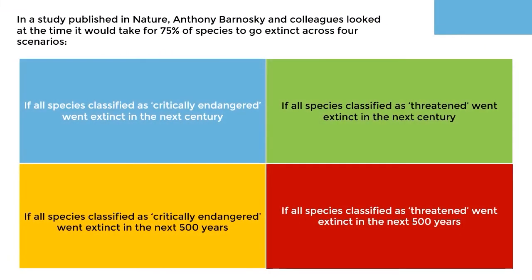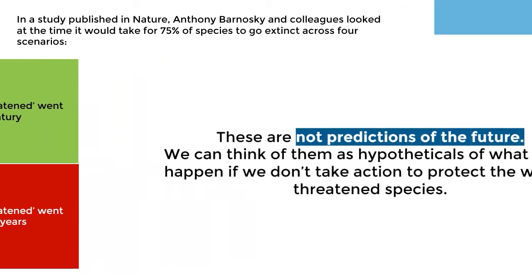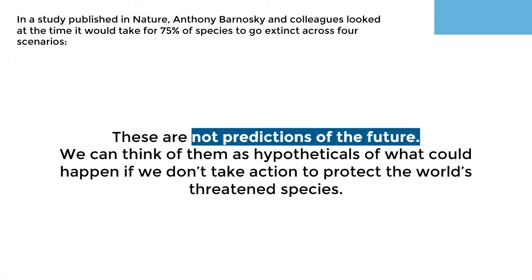In a study published in Nature, Anthony Barnosky and colleagues looked at the time it would take for 75 percent of species to go extinct across four scenarios. First, if all species classified as threatened went extinct in the next century. Second, if all species classified as critically endangered went extinct in the next 500 years. Third, if all species classified as threatened went extinct in the next 500 years. These are not predictions of the future, but hypotheticals of what could happen if we don't take action to protect the world's threatened species.